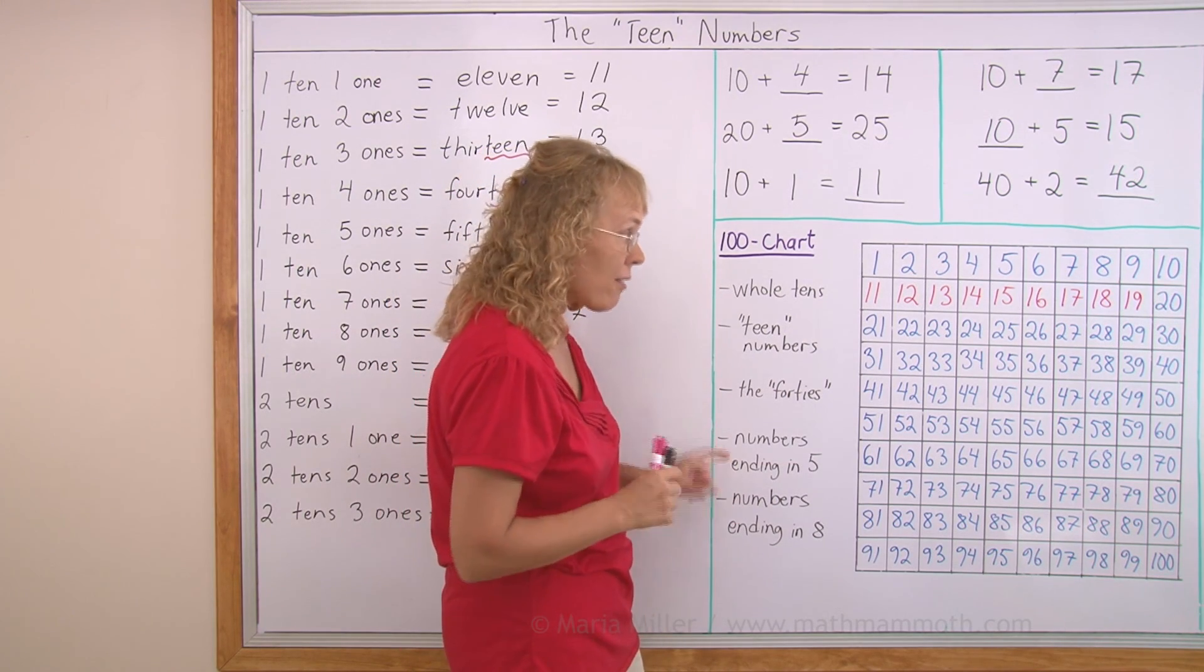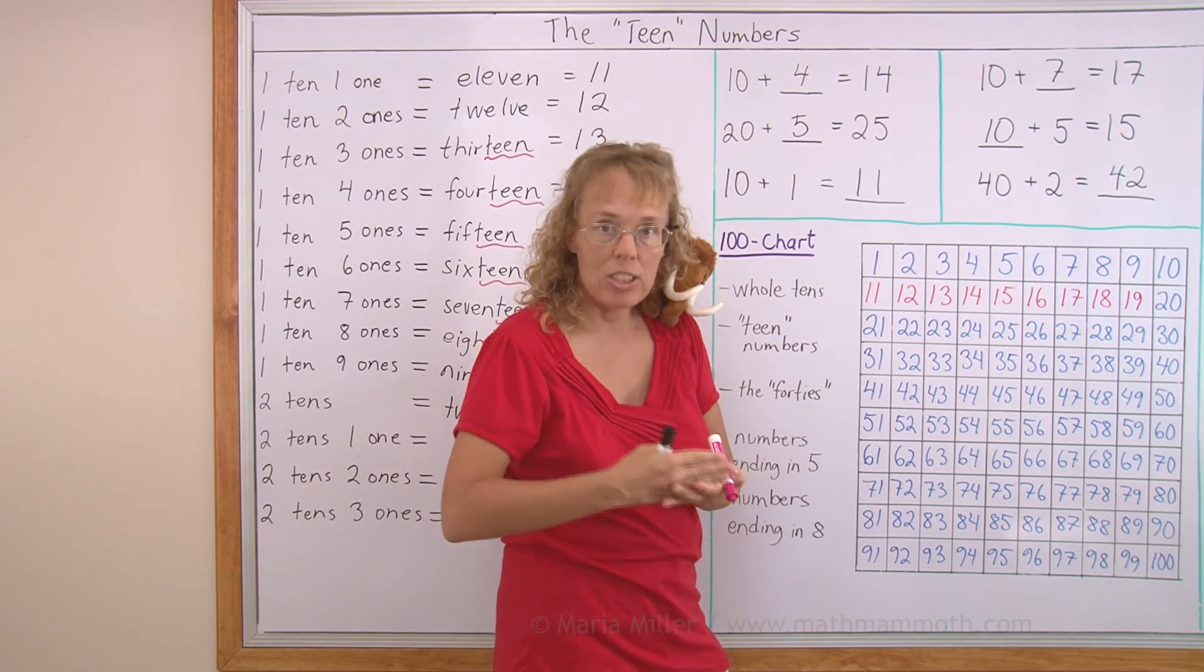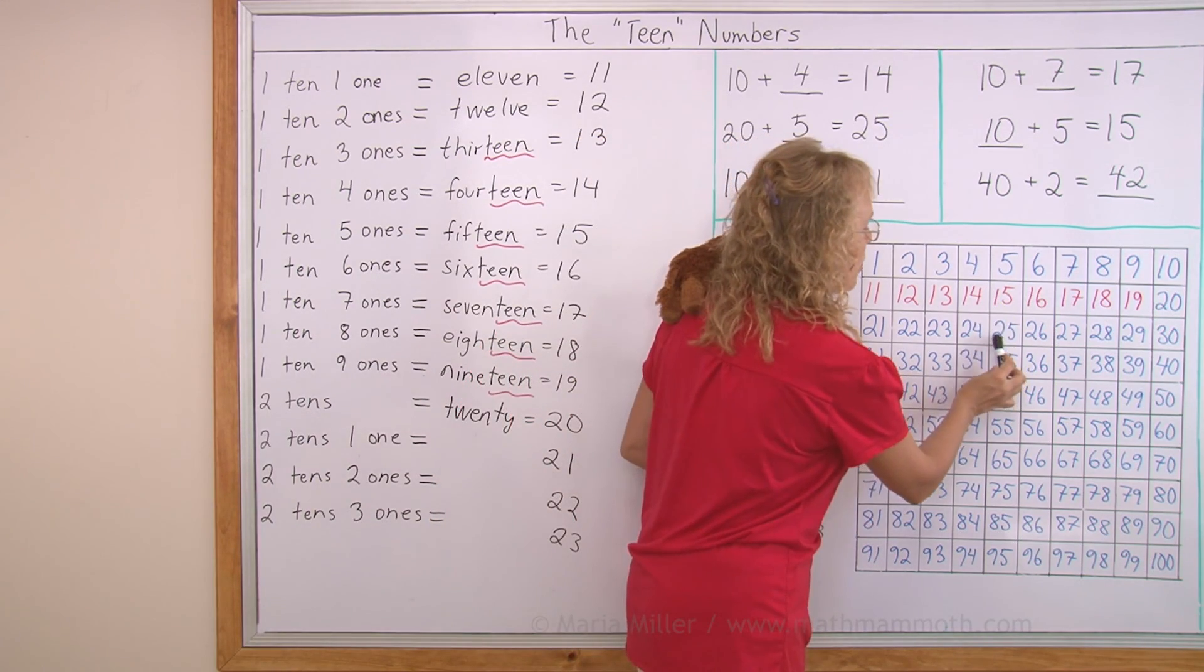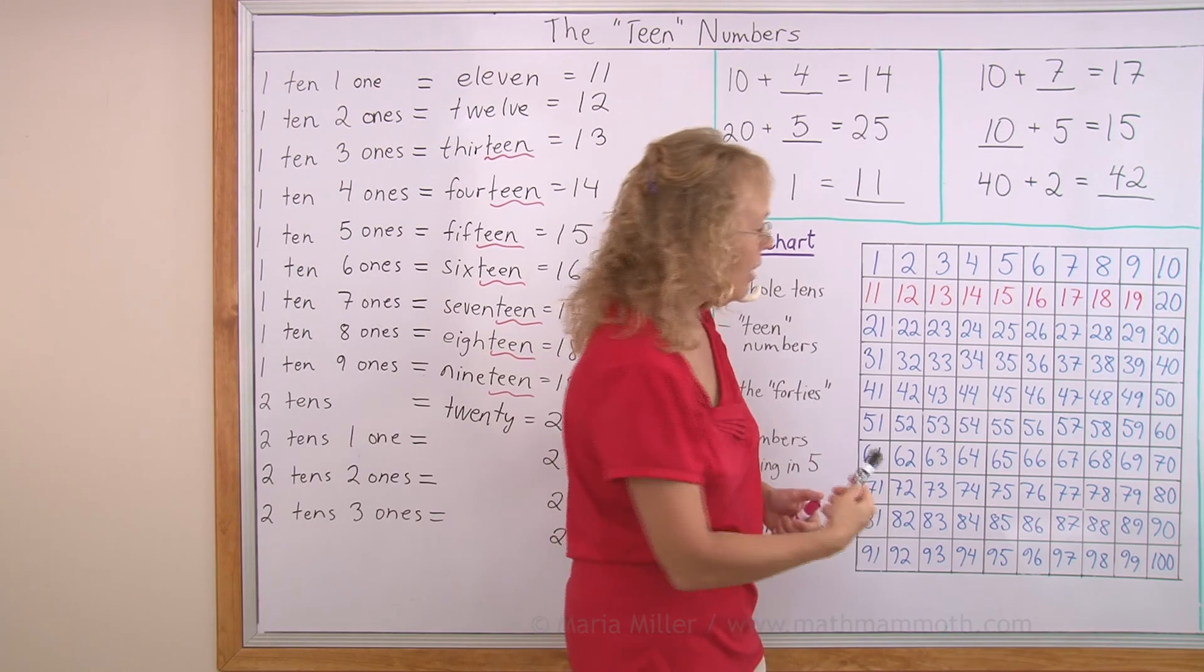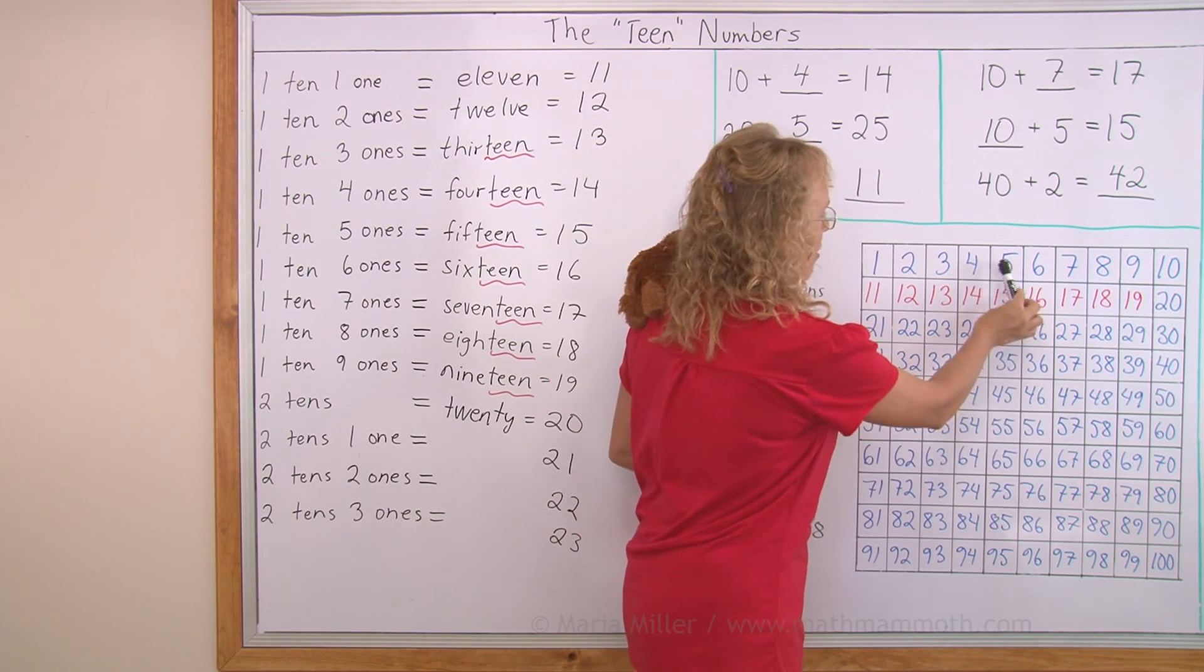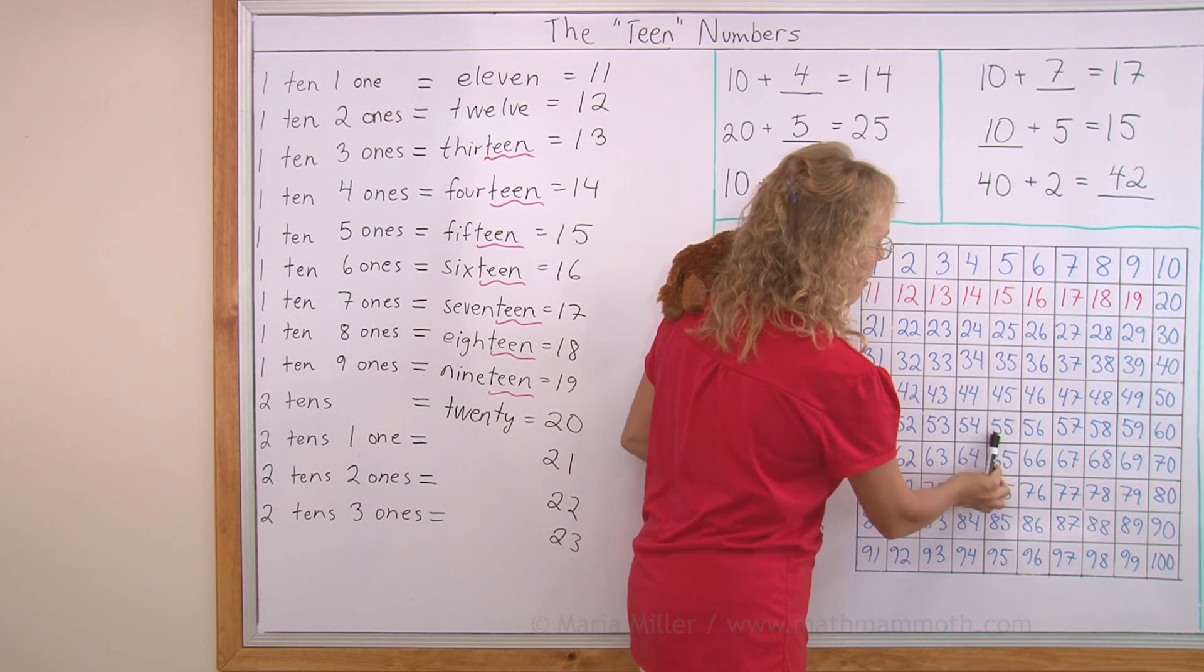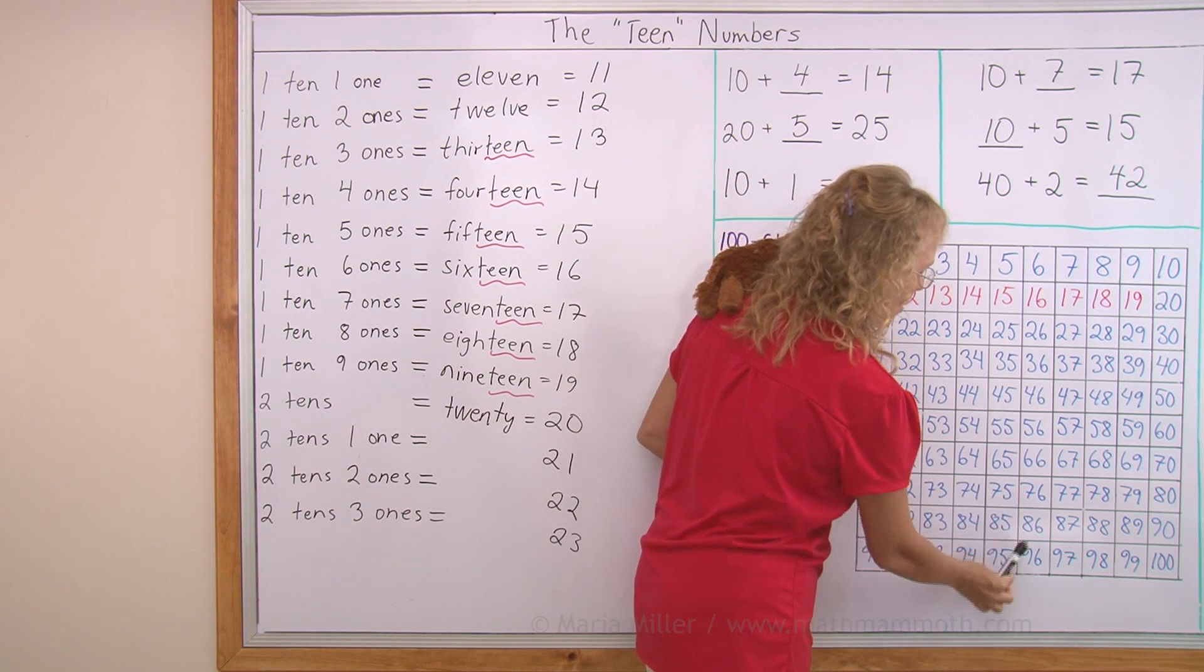Numbers ending in 5. Okay, that means that the last digit is 5. For example, this one: 25 ends in 5. They are here. All of these numbers end in 5: 5 and 15, 25, 35, 45, 55, 65, 75, 85, 95.